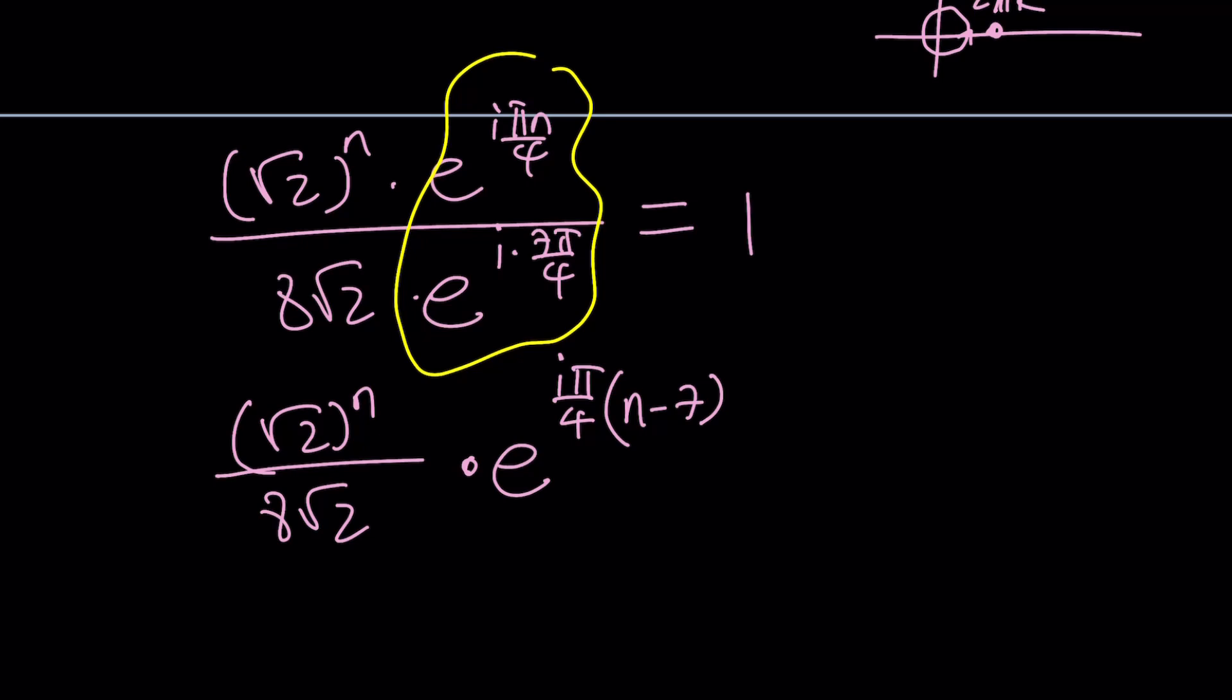And that is equal to 1, but I'm going to write it as e^(2πki). And then we're going to use the natural logs.